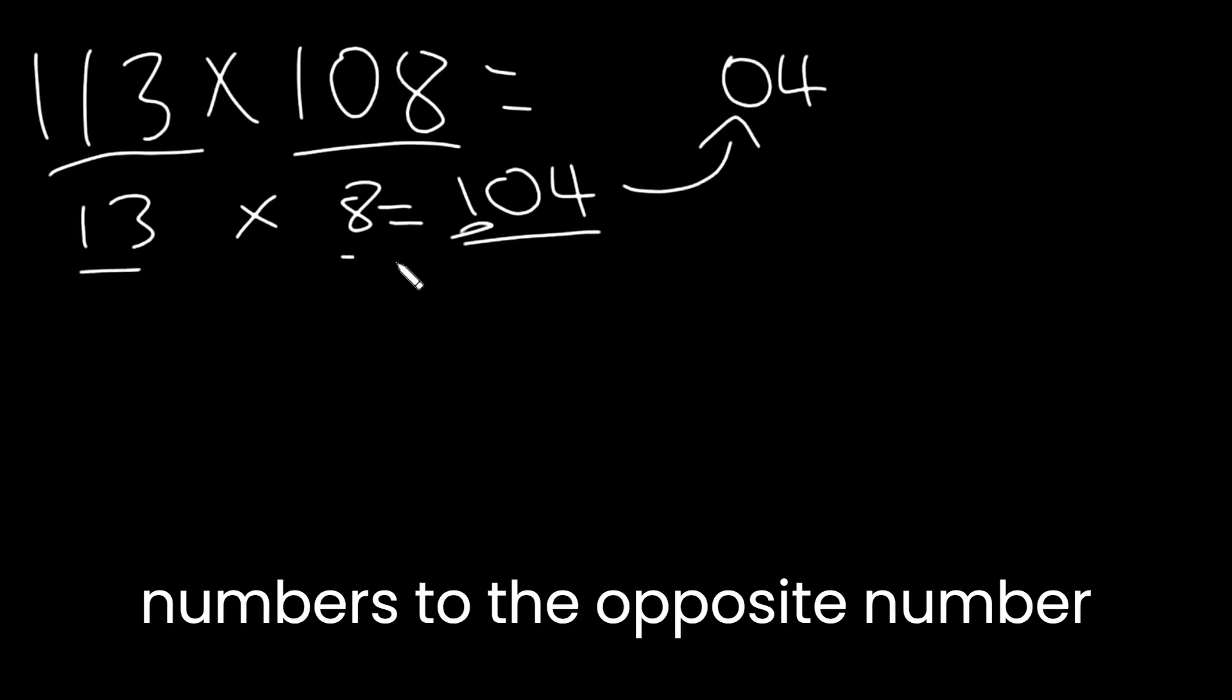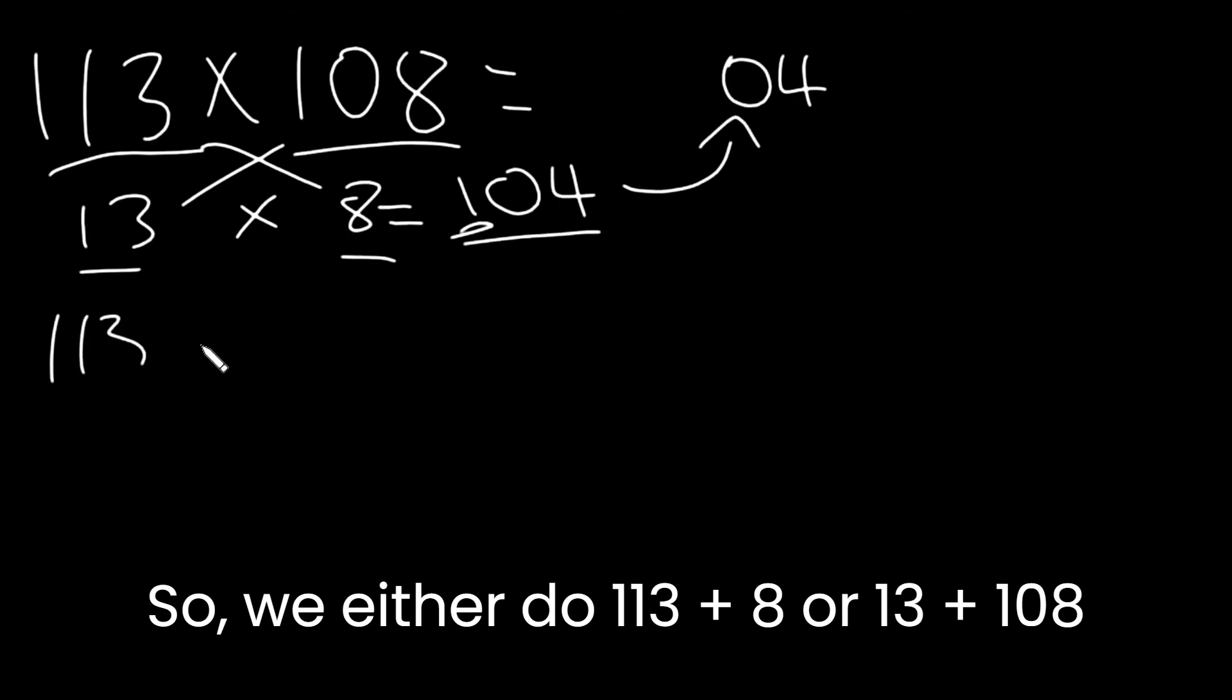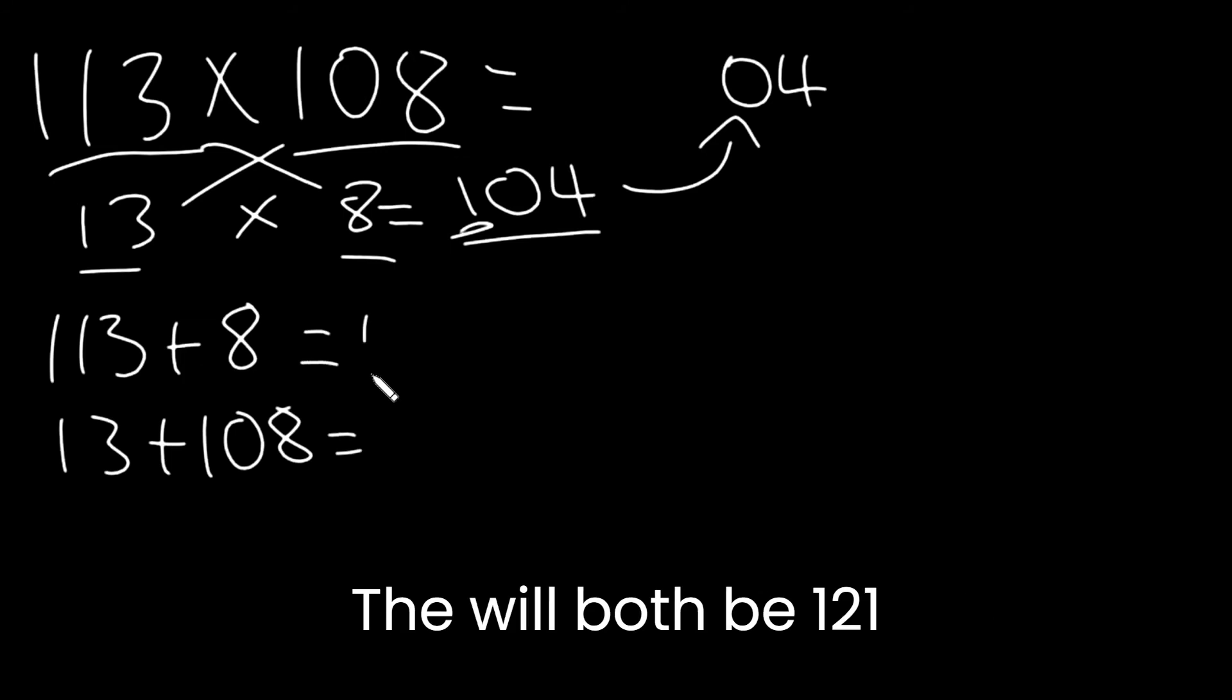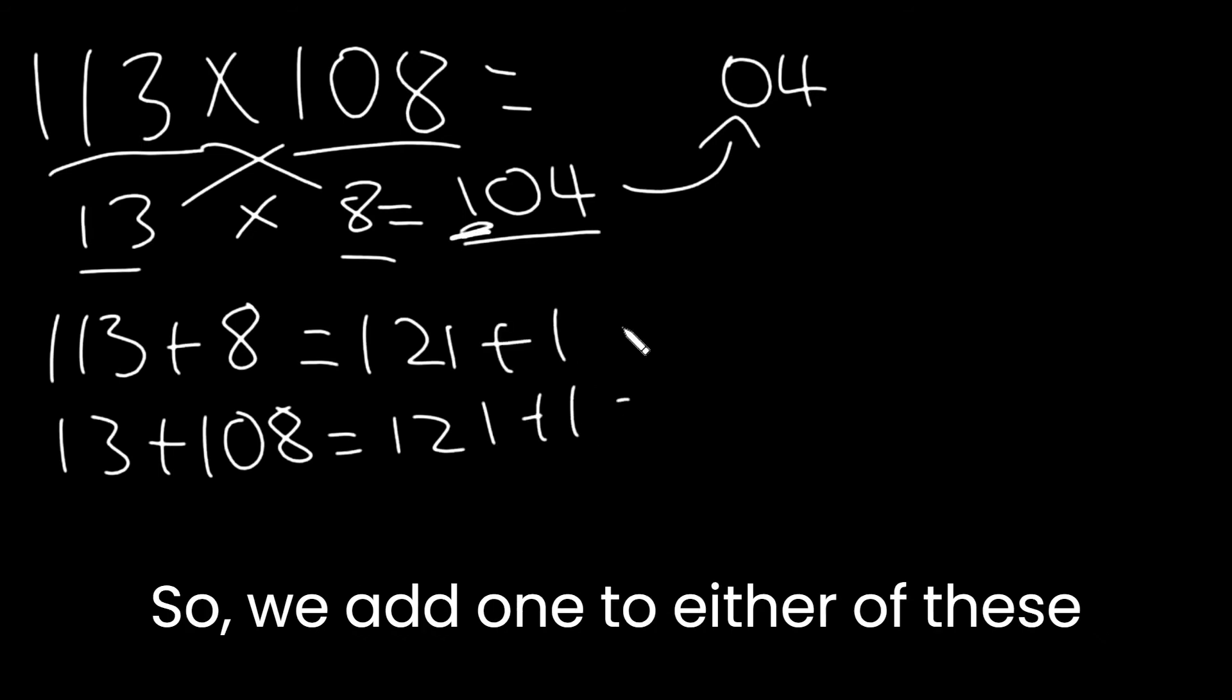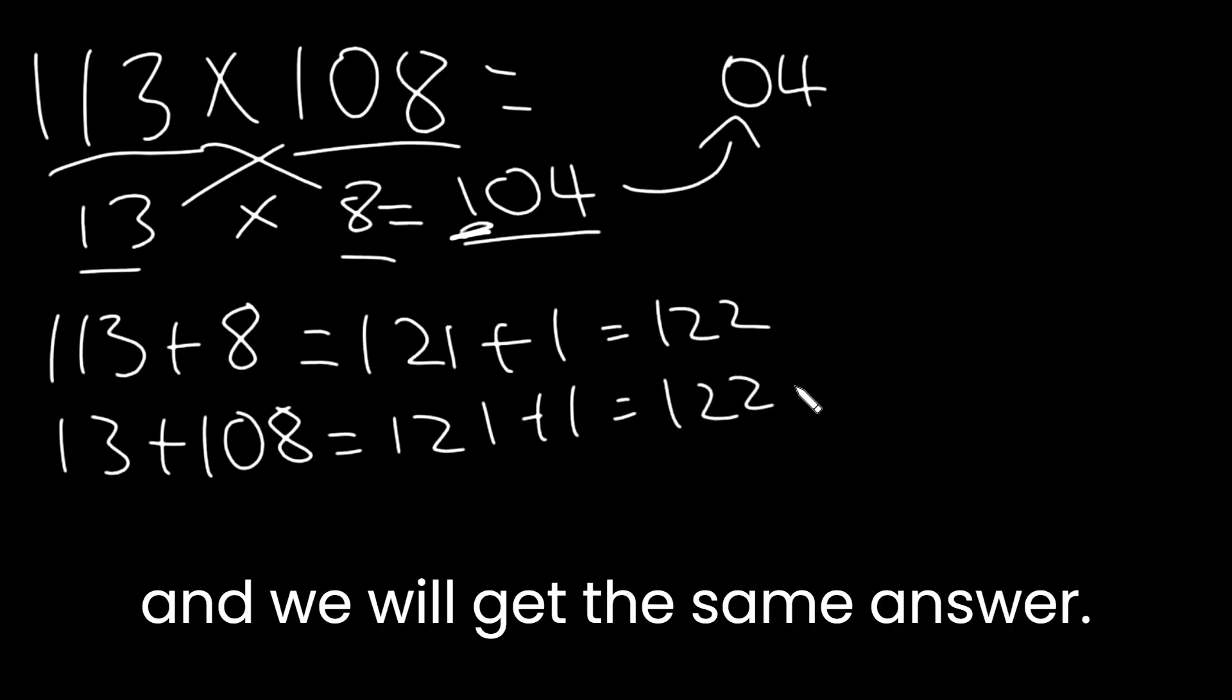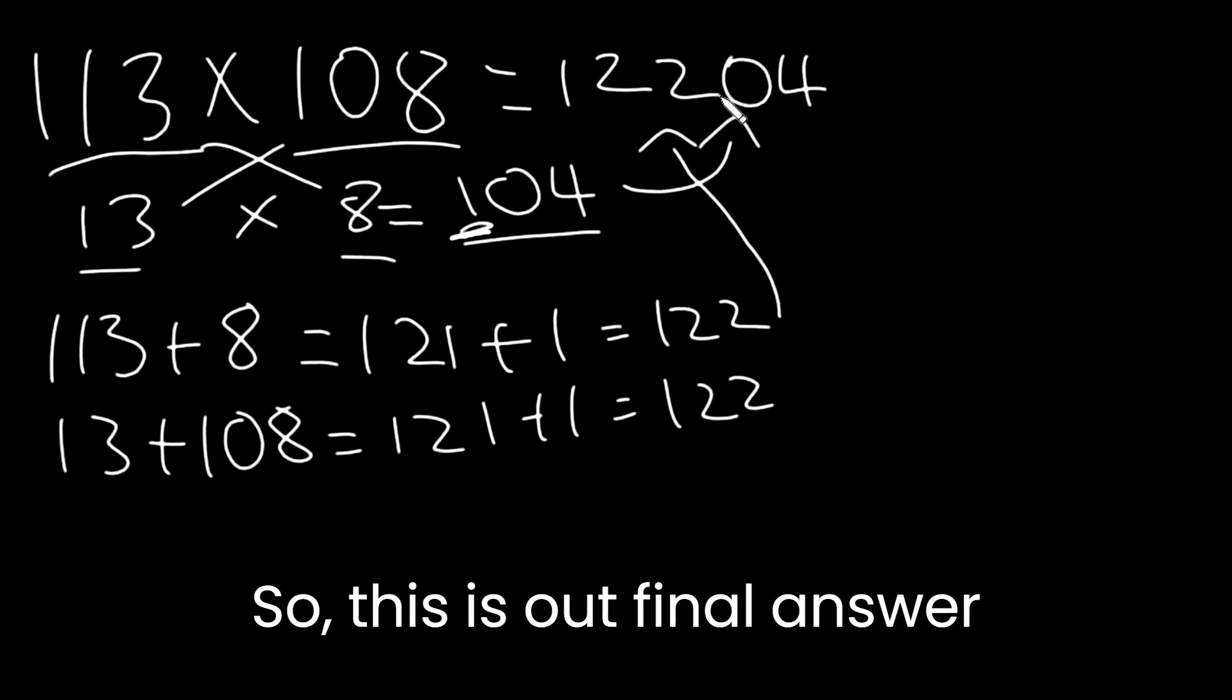The next step is to add either of these numbers to the opposite number. So we either do 113 plus 8 or 13 plus 108. They will both be 121. Then we have to add the carried one. So we add one to either of these and we will get the same answer. This number will go over here. So this is our final answer.